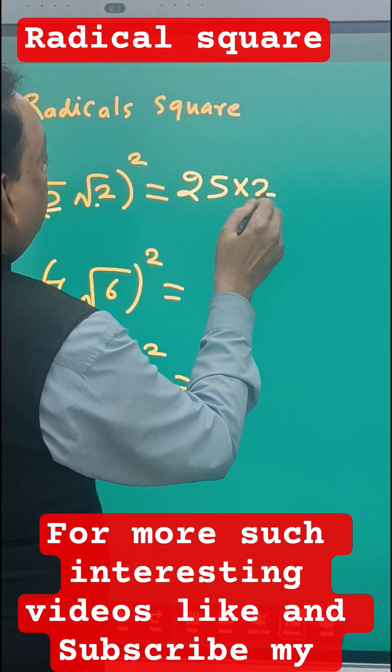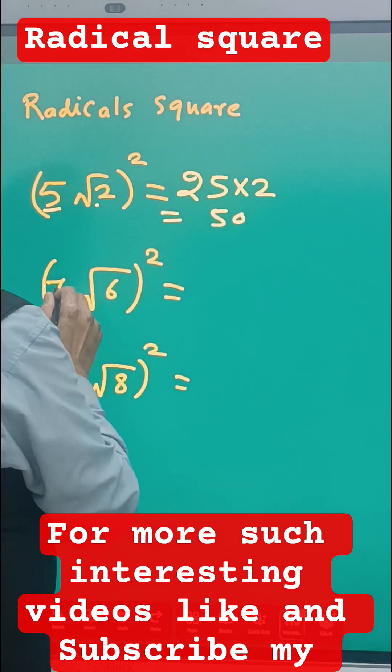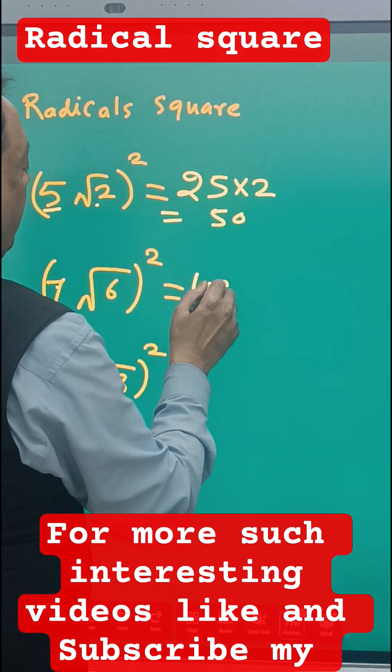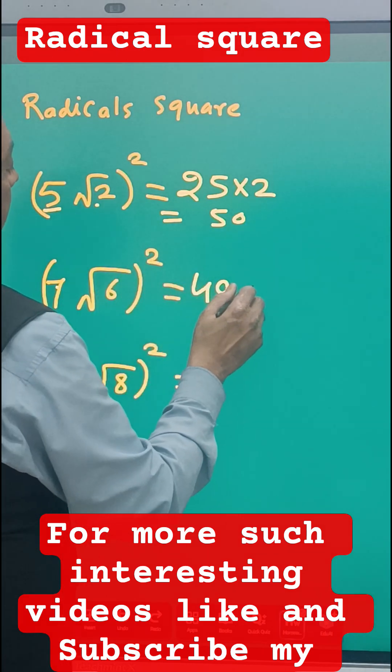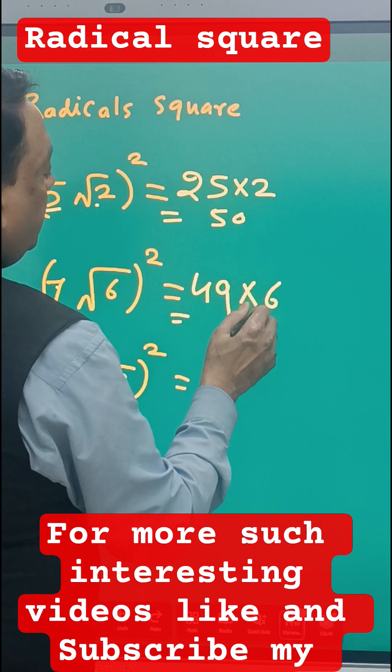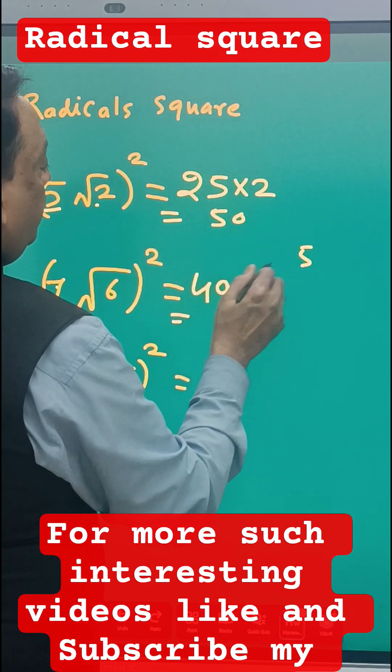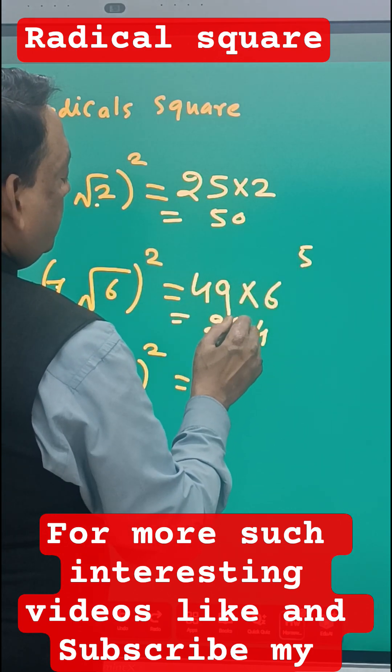Same way here, 7 square 49, and then root 6 square into 6. So 7, 49 into 6, 9, 6 a 54, carry 5, and 4, 6 a 24 plus 5, 29. So 294 is the answer.